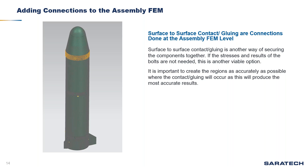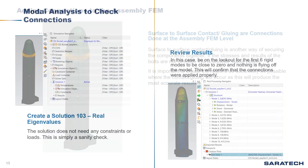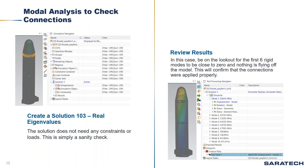At the assembly FEM level, we introduce CBushes to simulate creating those bolts. Another option for connections is surface-to-surface contact or surface-to-surface gluing, which is another method of securing components together. This is more viable when you don't need results for your bolts — if you're not interested in stresses from the bolts. It is important to create the regions as accurately as possible where they will be contacted or glued, as this will produce the most accurate results.